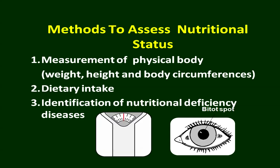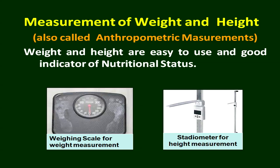In this picture you can see the eye — on the side you can see a black spot. These are Bitot's spots and reflect vitamin A deficiency. This other picture is a depiction of a weighing scale. When we are talking about physical body measurements, we will talk about weight and height. The technical word for that is anthropometric measurements — that includes measurement of weight, height, and body circumferences. It is very easy to use and a very good indicator of nutritional status.